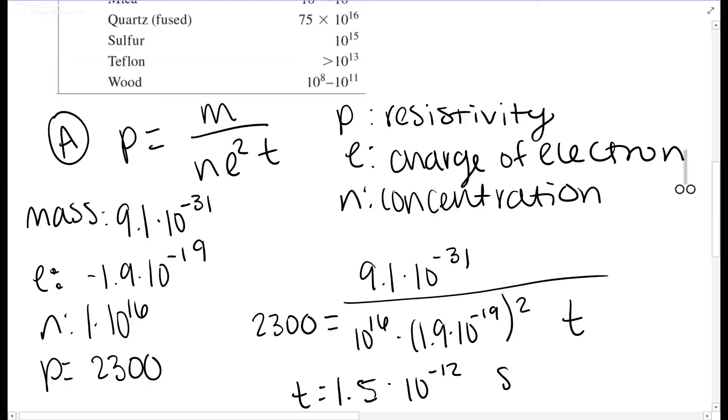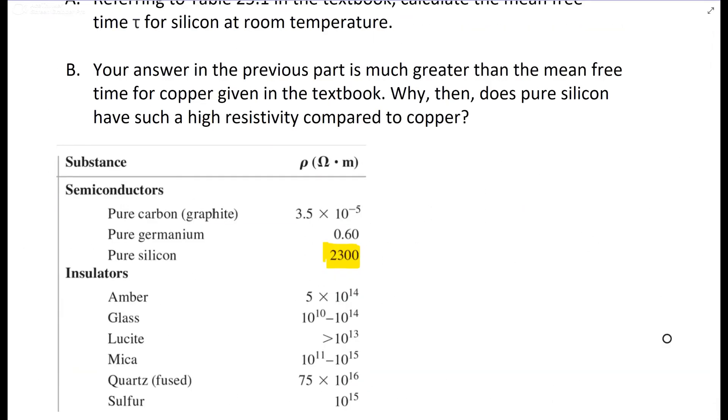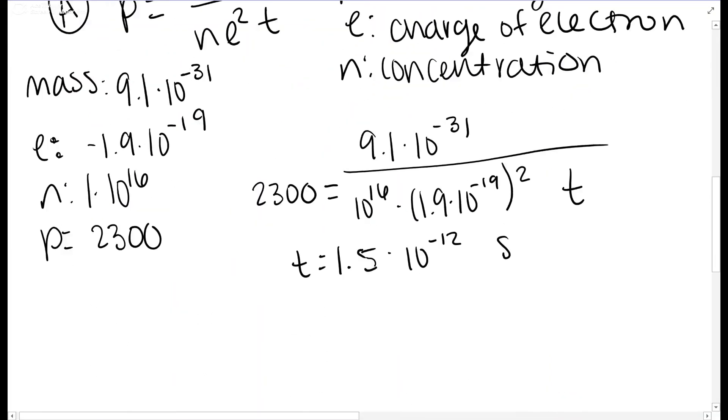So part B asks: why does silicon have such a high resistivity compared to copper?